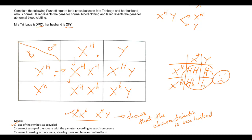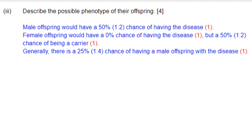Now for the last part of the question: describe the possible phenotypes of their offspring. Male offspring would have a 50% (1 in 2) chance of having the disease. Female offspring would have a 0% chance of having the disease, but a 50% chance of being a carrier. And overall, there is a 1 in 4, 25% chance of having a male offspring with the disease.